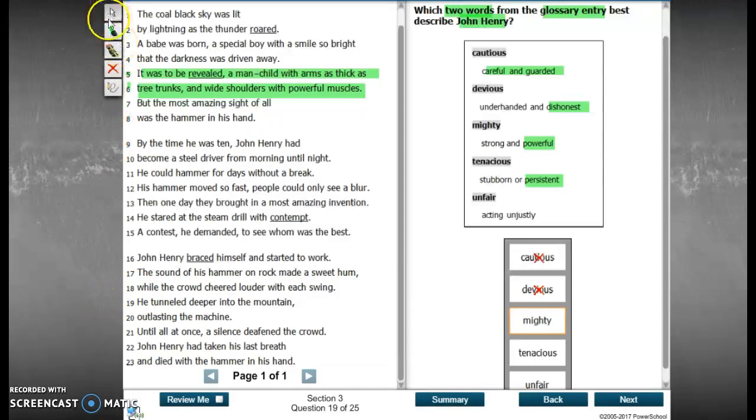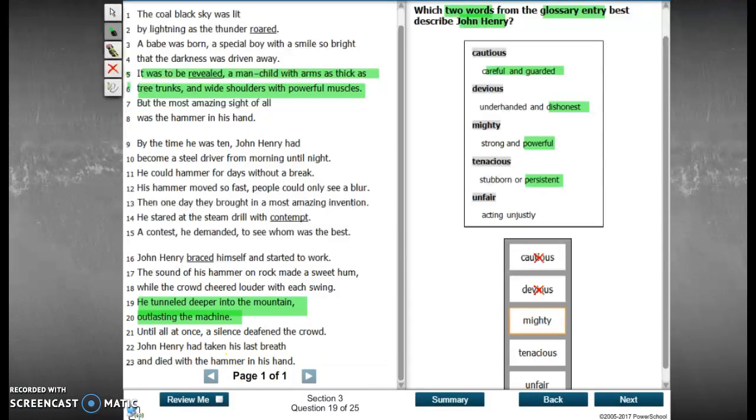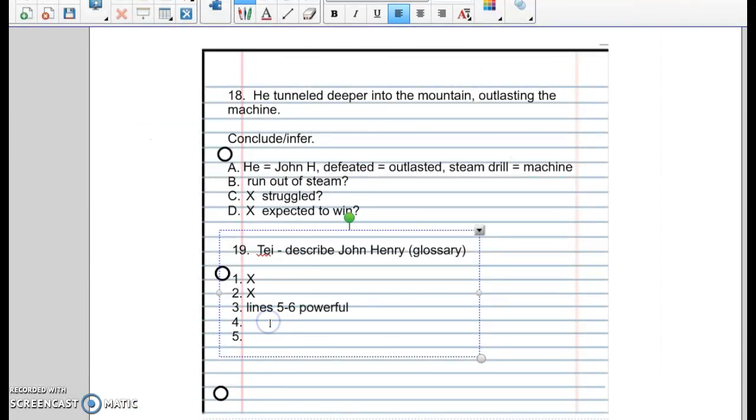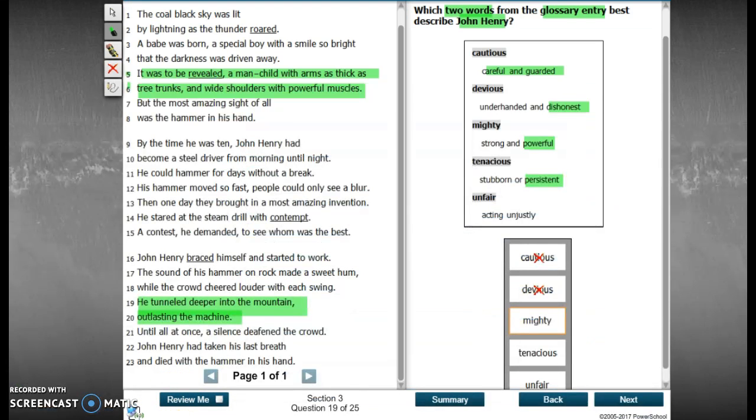He tunneled deeper into the mountain, outlasting the machine. That shows that he is persistent. He keeps working, keeps trying. As a matter of fact, he keeps trying until the man dies. So he's definitely a little too tenacious. And that is, what lines did I say that was? 19 and 20.